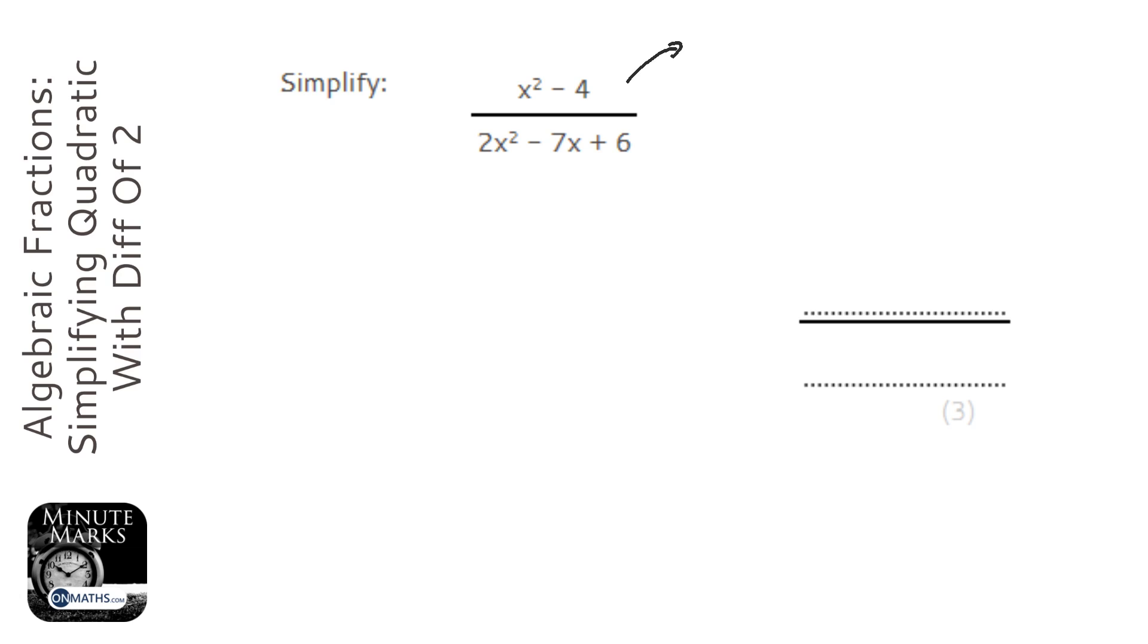When I factorize the top, you'll notice that's what we call difference of two squares. It's very easy. You do two brackets, and because it's x squared they're going to be x in both, and you do plus the square root of the second number minus the square root of the second number. If you don't know that, search on difference of two squares and the videos will come up to go through it slower.